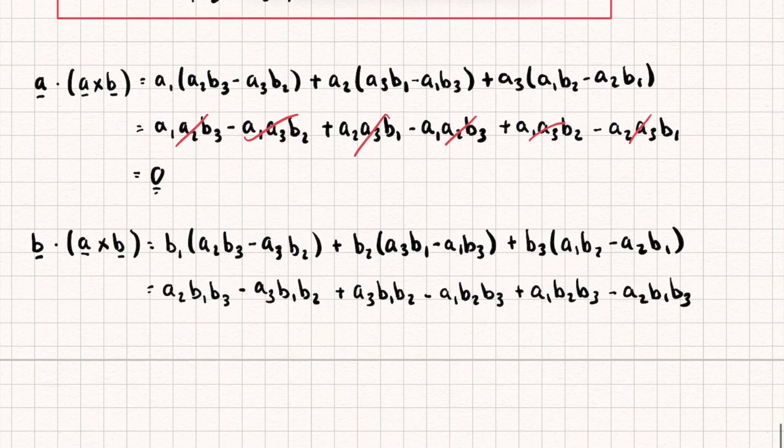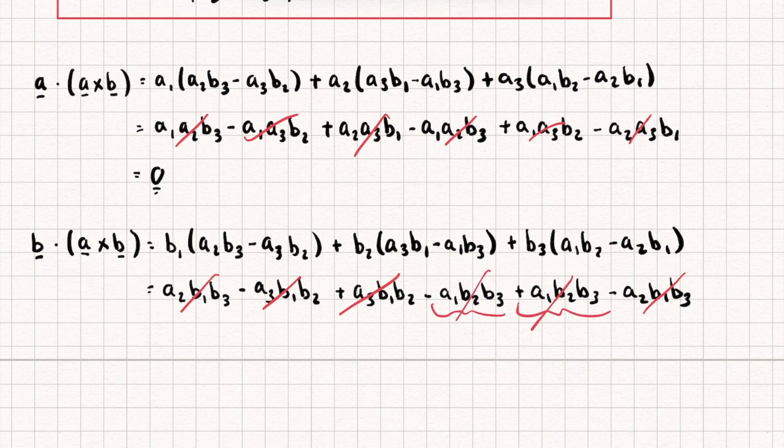Let's see if any of these terms cancel out. So a2b1b3 is going to cancel out with this term here. We also have minus a3b1b2 which cancels with this term here. And finally a1b2b3 cancels with this term. So again we've shown this equals zero. Therefore vector b is also perpendicular to a cross b.